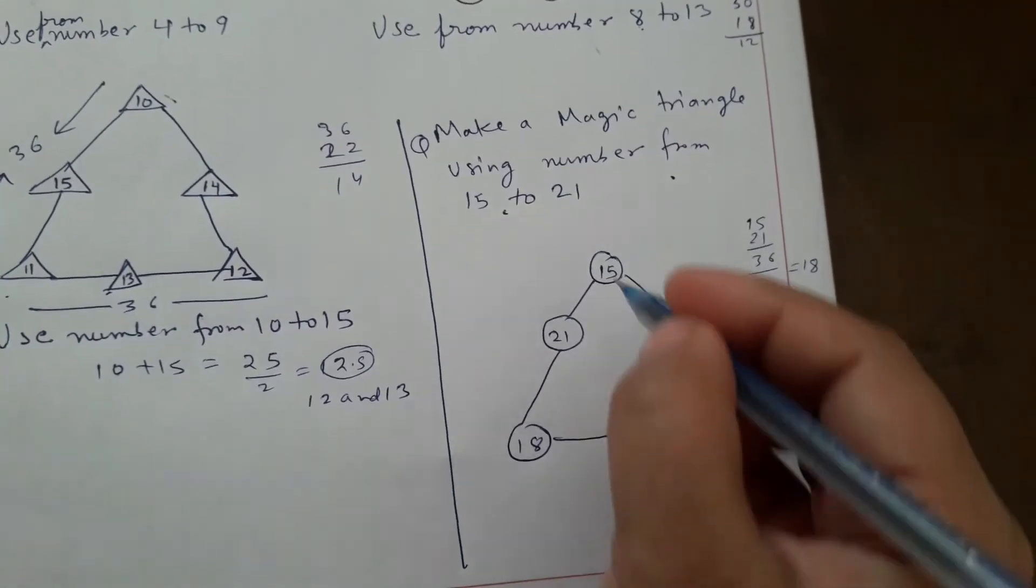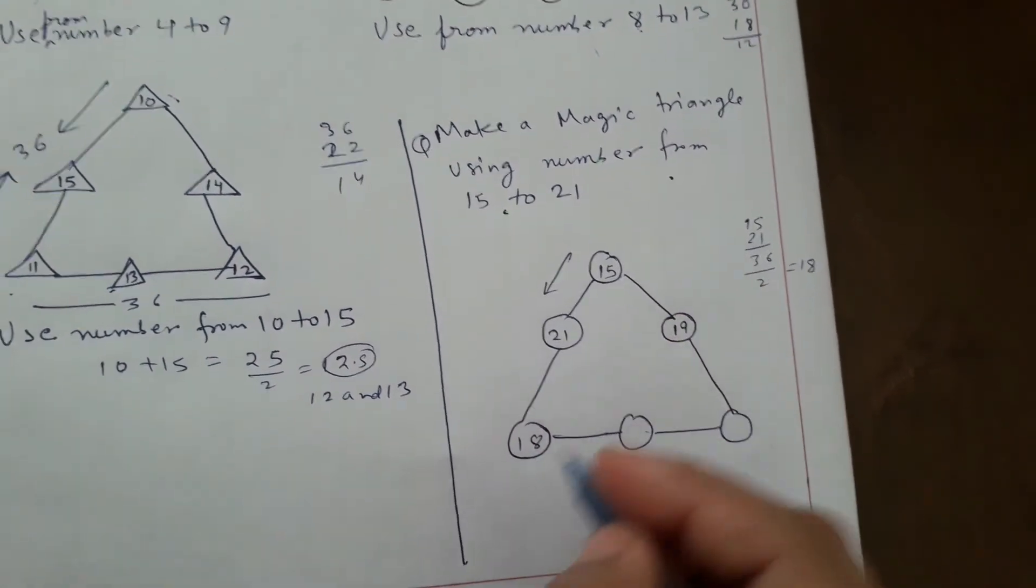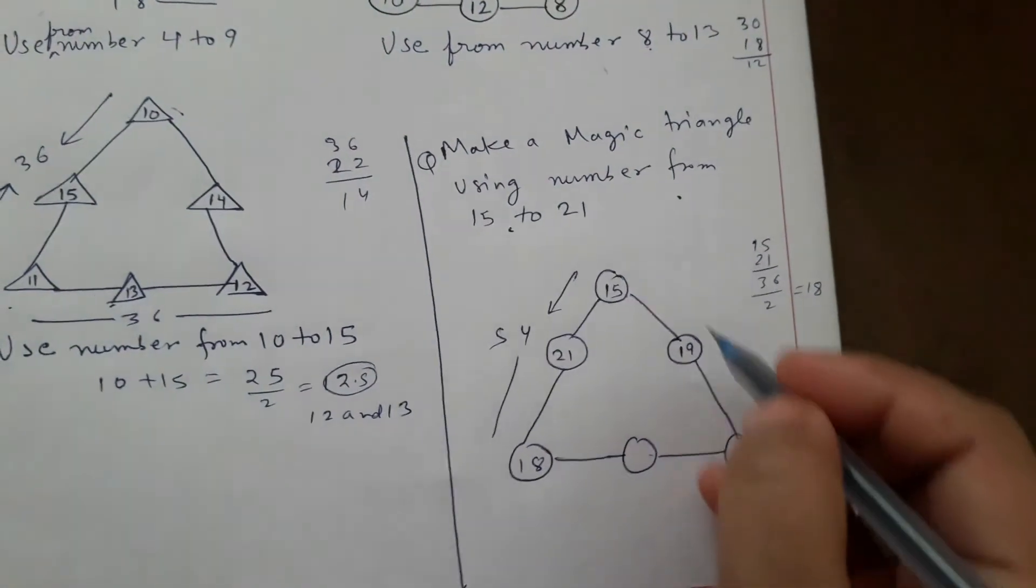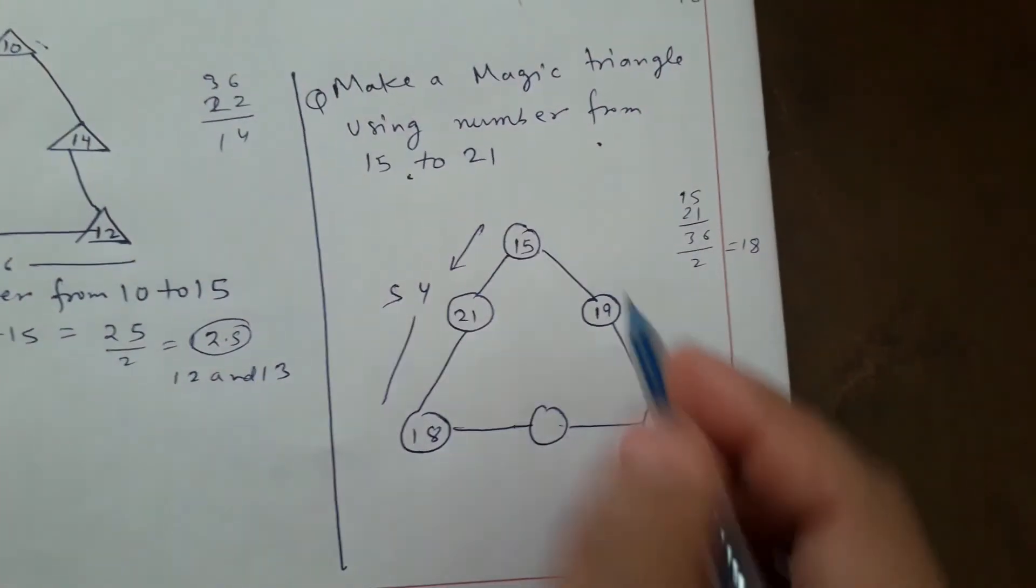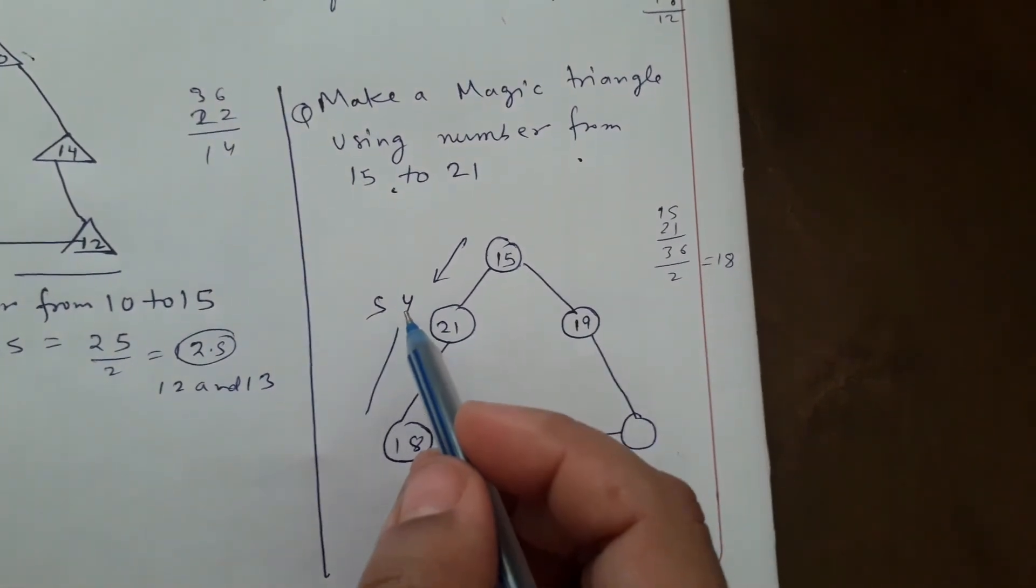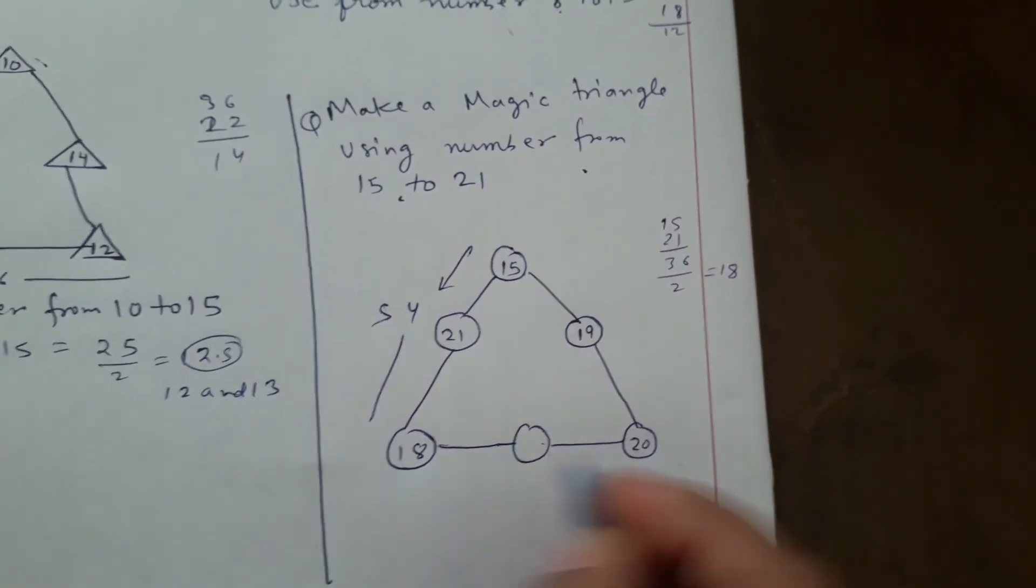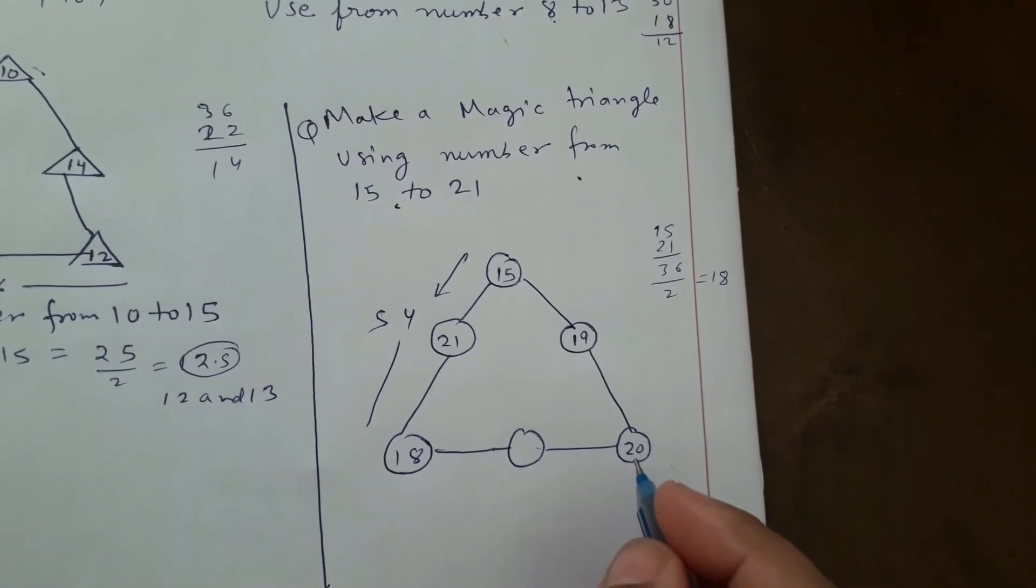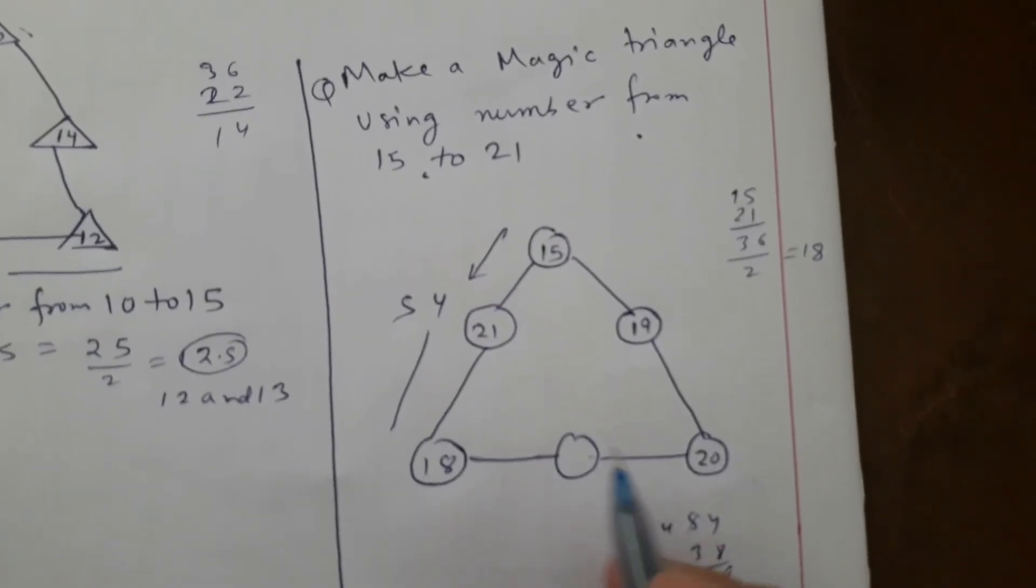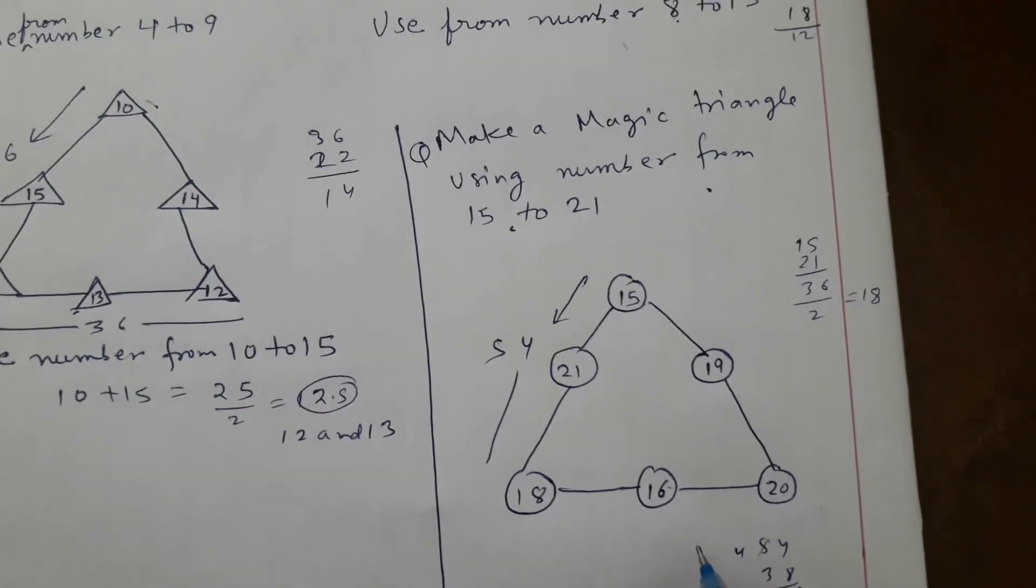If we put 19 here, then first add this number - it's coming 54. Then 15 plus 19 is 34. Here also it should be 54. 54 minus 15 plus 19 will come to 20. If we add 18 plus 20, that's 38, and subtract from 54, it will come 16. Here it will be 16.